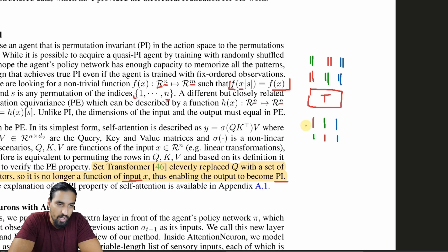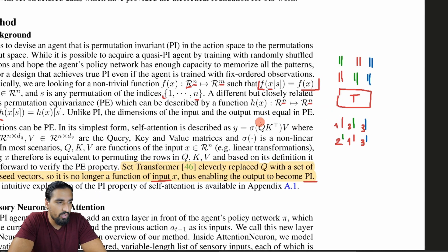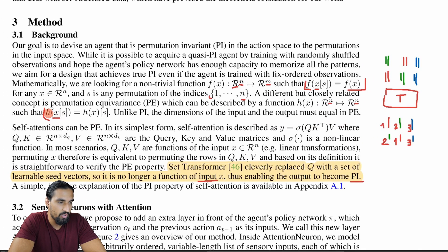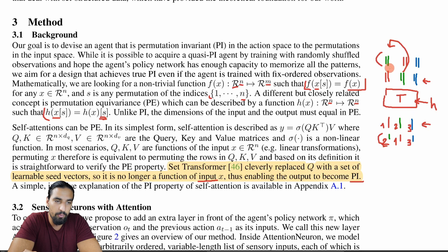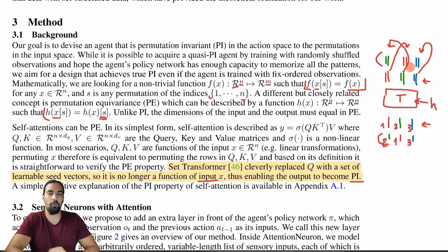Let me make the permutation explicit. The original ordering is one, two, three. We applied the permutation [2, 1, 3] — green first, then red, then blue. This formula tells us that passing this permuted input through H should equal passing the original input through H and then applying the same permutation to the output. So we take the second output and put it first, take the first output and put it second, leave the third where it is — and we get exactly the permuted output. That's permutation equivariance.